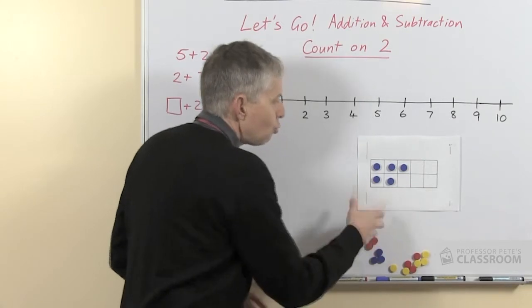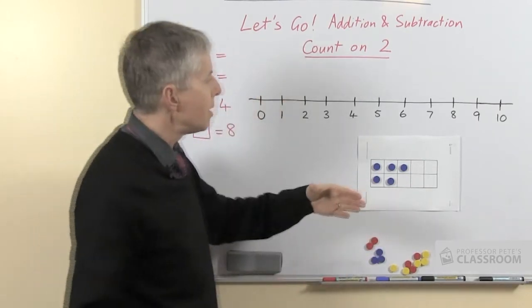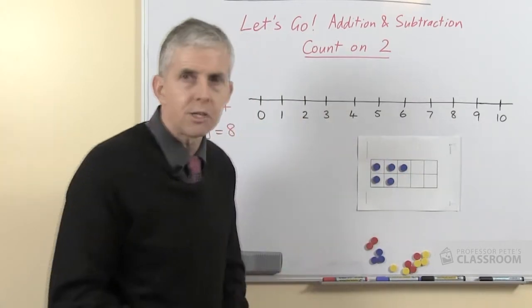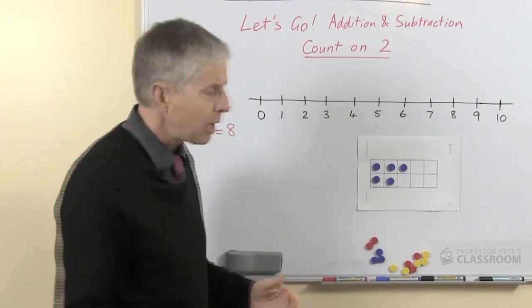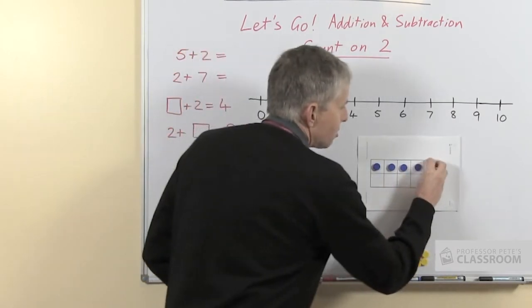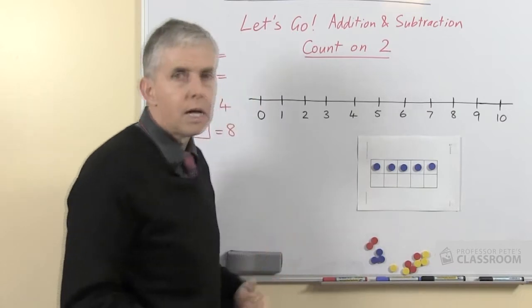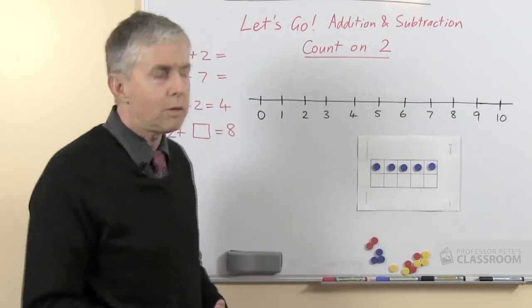Again after a while we might put out some of the counters and say put out 5 and say imagine the other 2, what number would we get to? There's also another arrangement, we could fill one row to start with so that would be 5, where would the other 2 go?